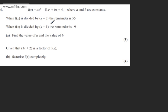This is question 4. We're told f of x is equal to ax cubed minus 11x squared plus bx plus 4, where a and b are constants. We're told when f of x is divided by x minus 3, the remainder is 55. When f of x is divided by x plus 1, the remainder is minus 9. In part A, we're asked to find the value of a and the value of b.